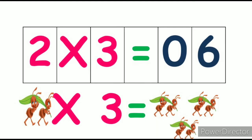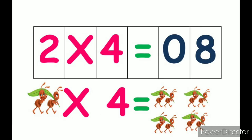2 threes are 6. So 2 ants in 3 groups make 6. So 2 threes are 6. 2 fours are 8. Now 2 ants multiplied with 4. There are 4 groups. So how many ants does it make? 8. 2 fours are 8.